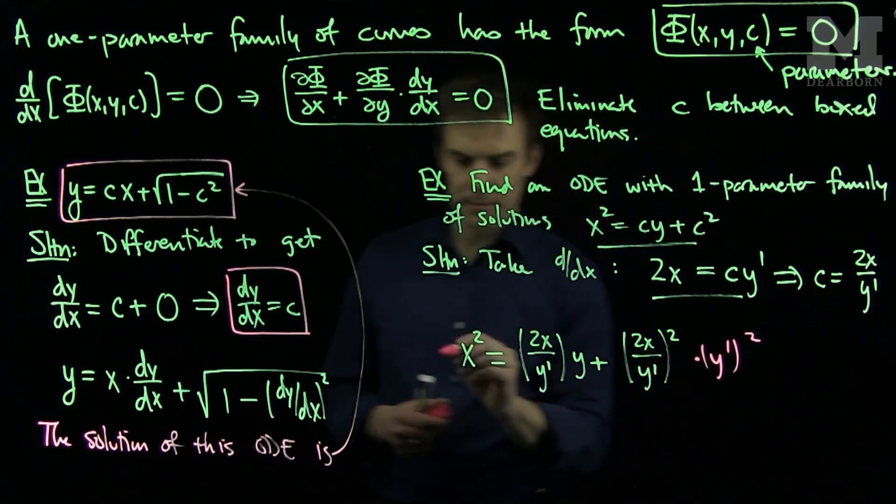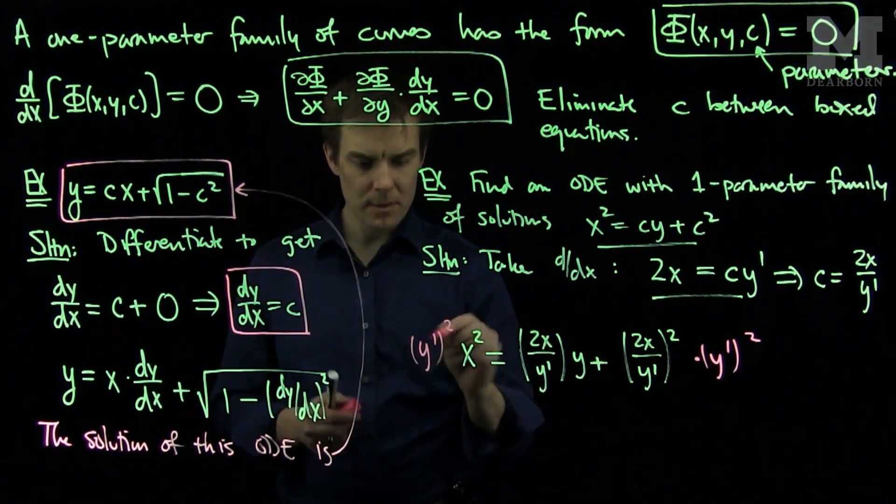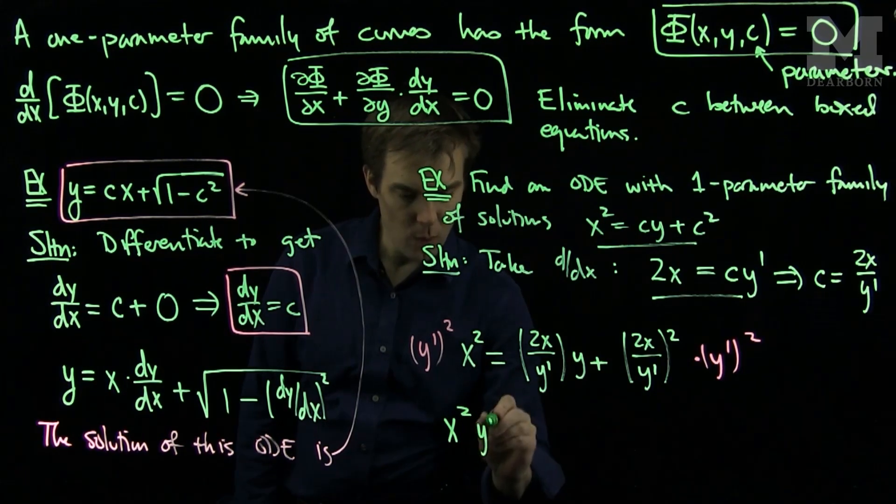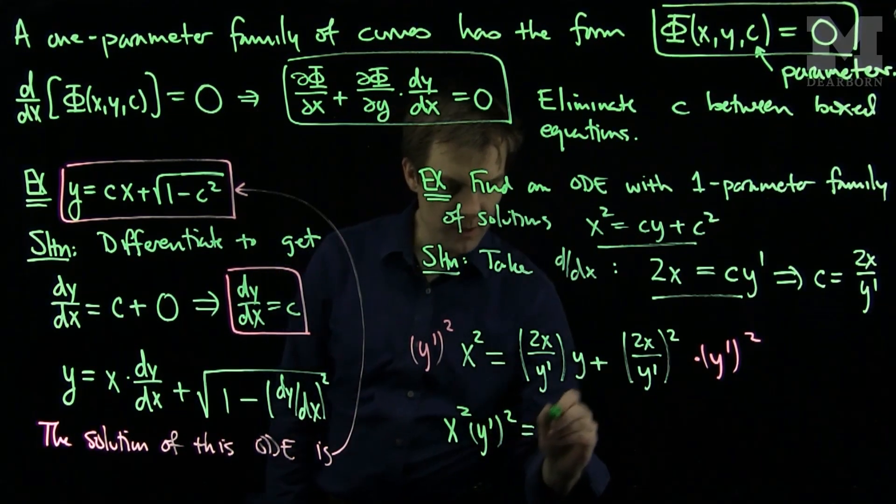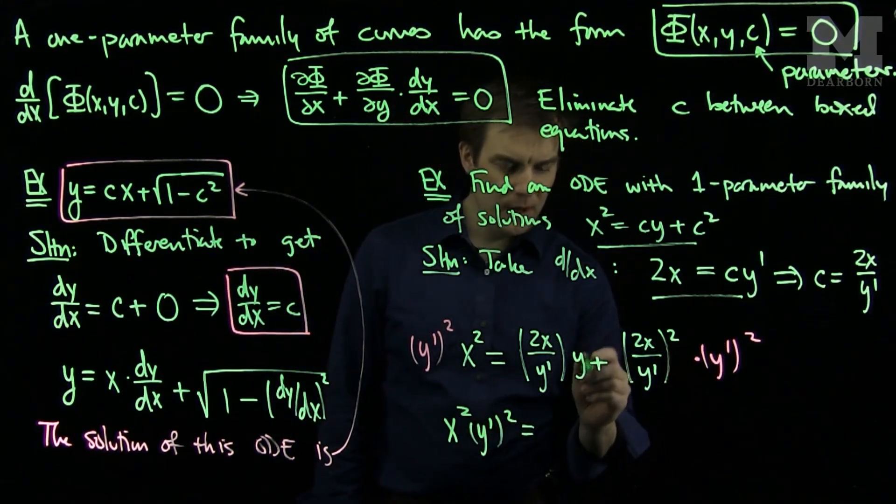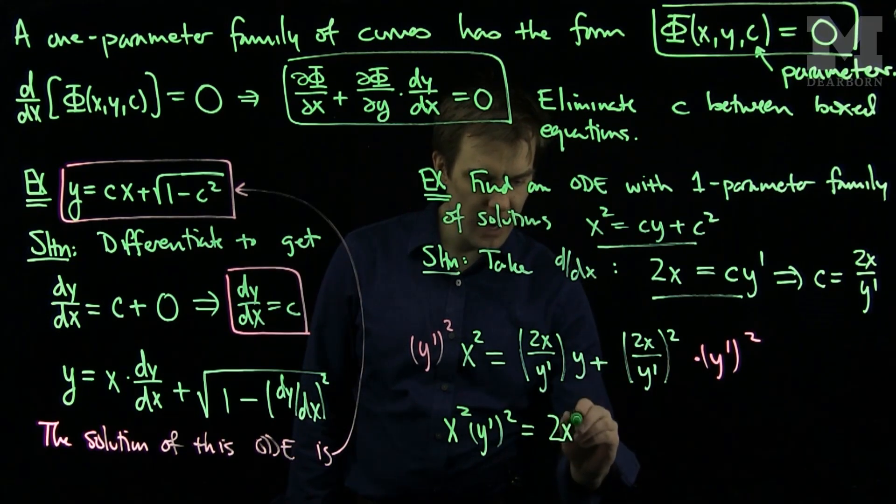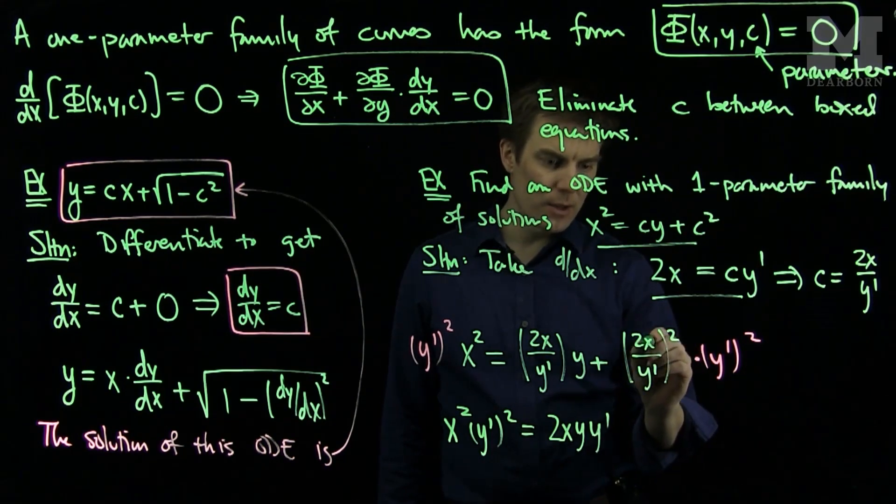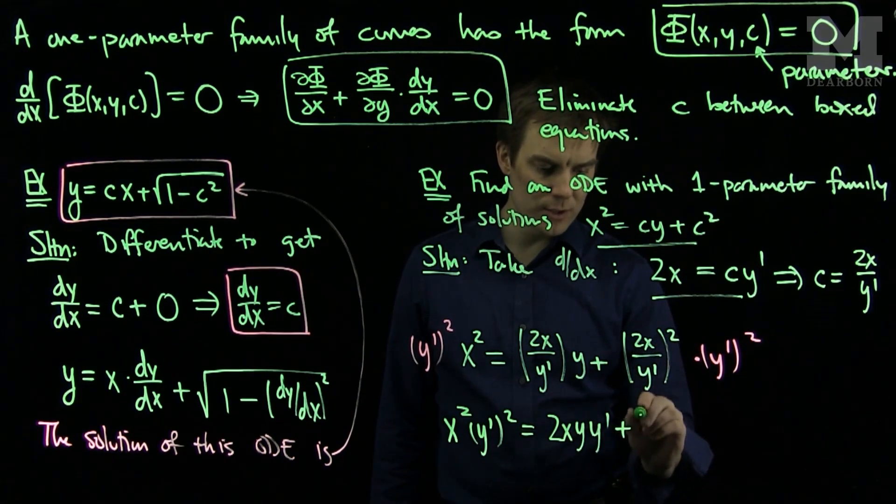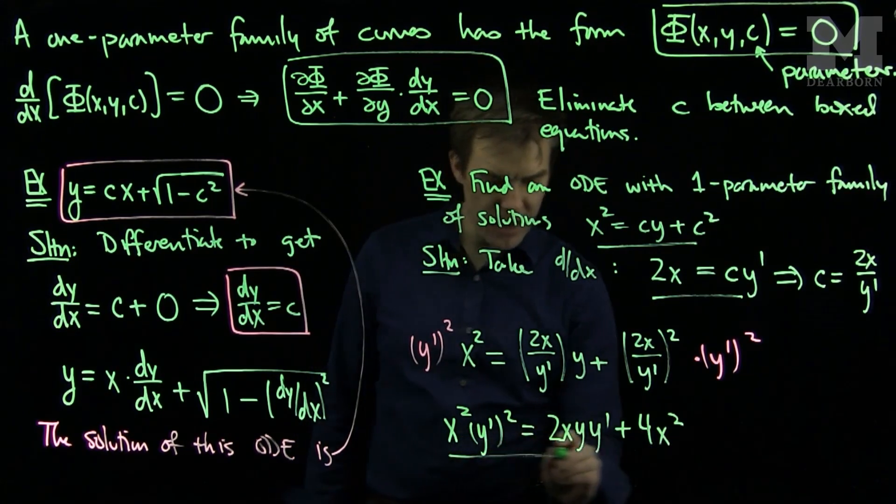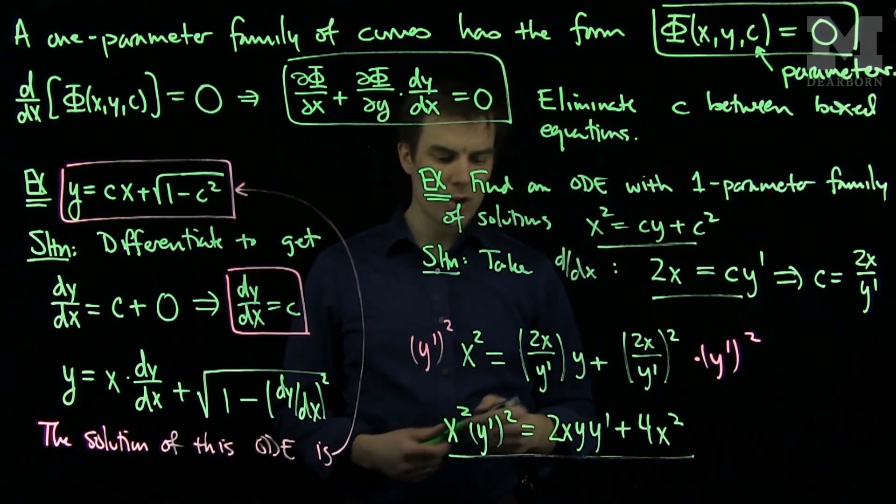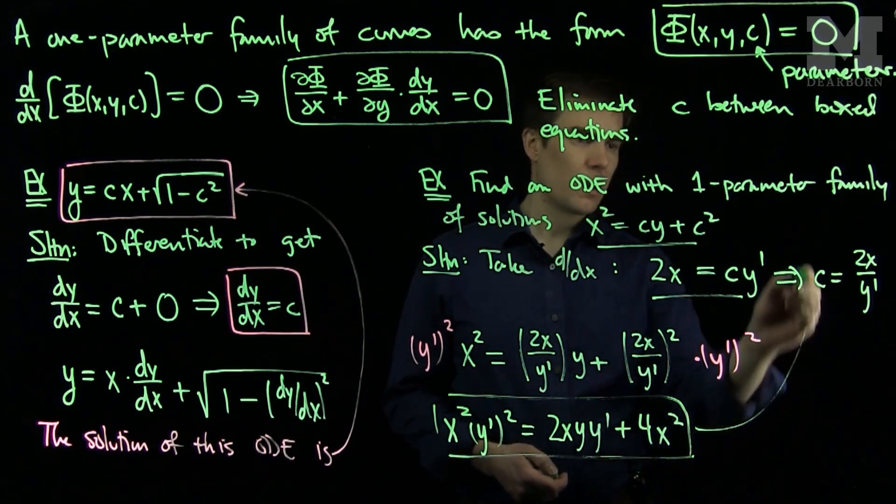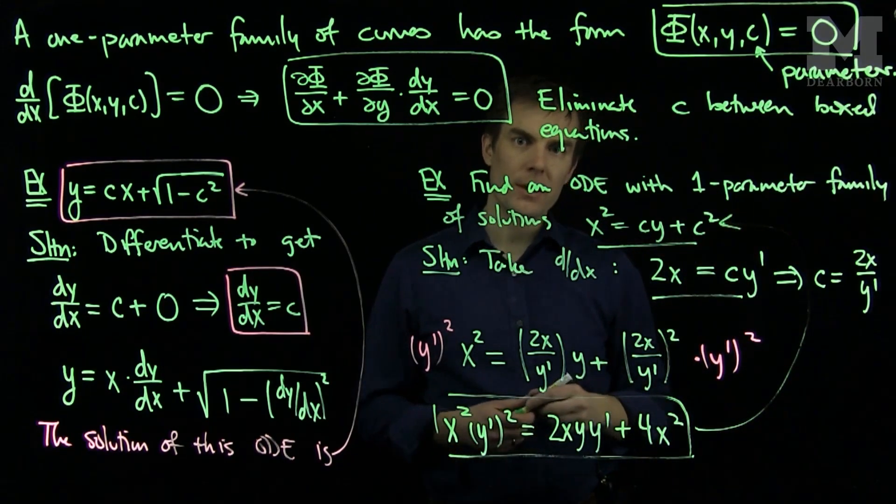We can simplify this by multiplying both sides by (y')². We will arrive at our final solution: x²(y')² = 2xy·y' + 4x². I now have an ordinary differential equation, and the solution of this ODE is the given family of curves.